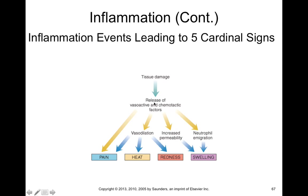Vasoactive and chemotactic factors also promote the emigration of neutrophils from the bloodstream into tissue, which release factors that promote swelling. Too much pain, heat, swelling, and redness can lead to loss of function and tissue damage. Inflammation is an important part of the immune response, but too much inflammation can damage your body's tissues.